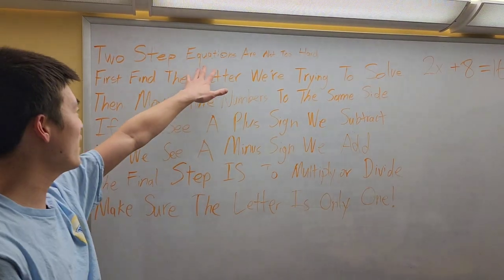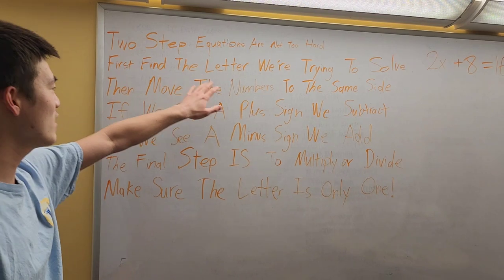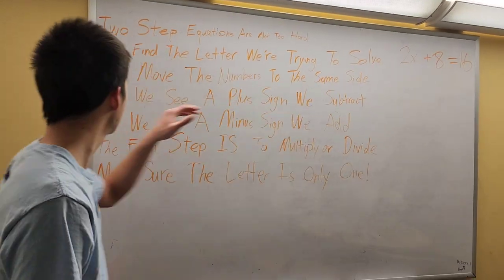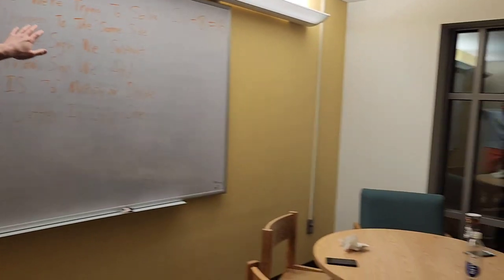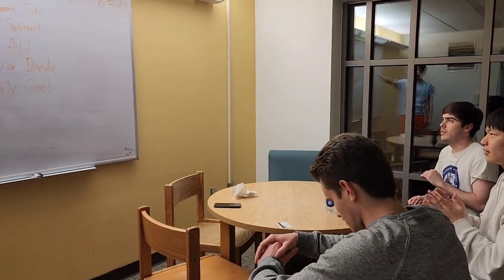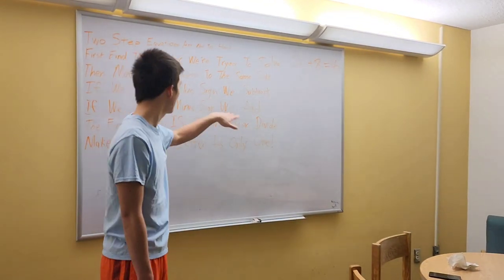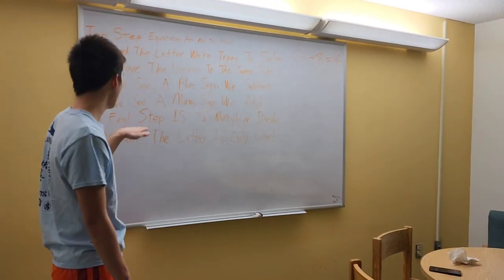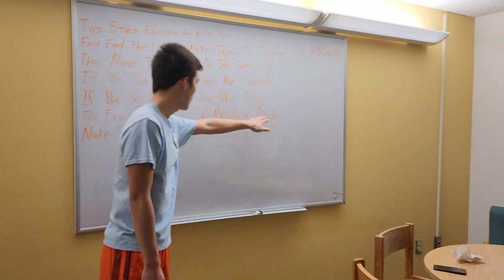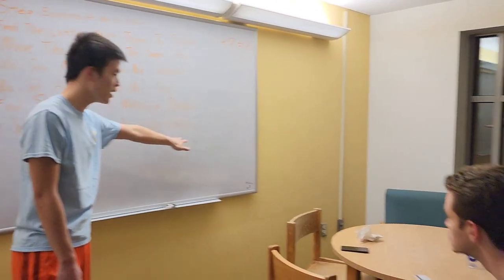So, two-step equations are not too hard. First, find the letter we're trying to solve. Then move the numbers to the same side. If we see a plus sign, we subtract. If we see a minus sign, we add. The final step is to multiply or divide. Make sure the letter is only one.